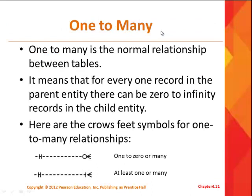The most common relationship is one-to-many. We've seen a lot of these — like a customer can have many orders, and each order goes back to one customer. There are two crow's feet notations, which are very similar; the only difference is the zero. That zero just means a customer at a minimum might not have any orders, so you could have a customer record with no orders. The other notation says each customer has at least one order and at most many orders — many just means more than one.